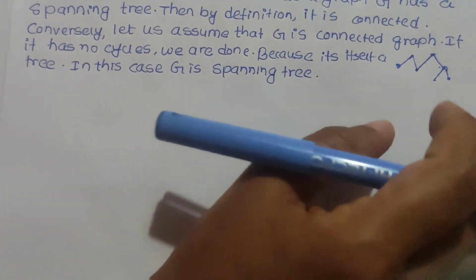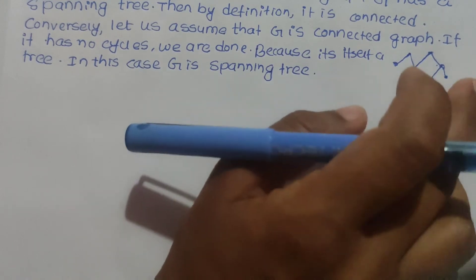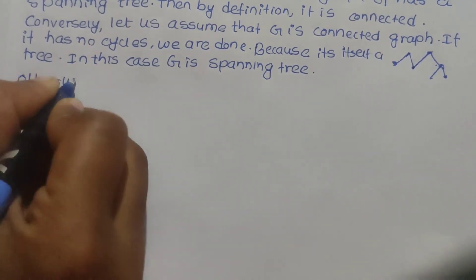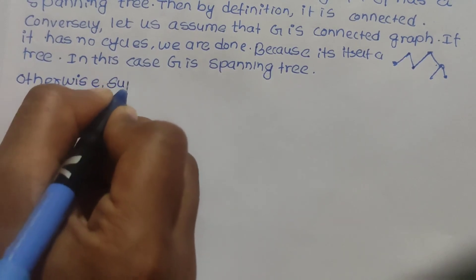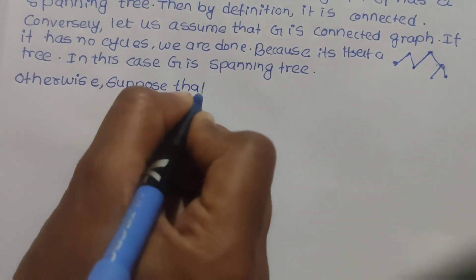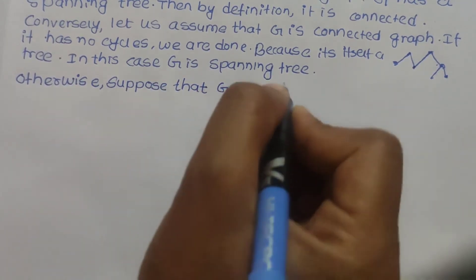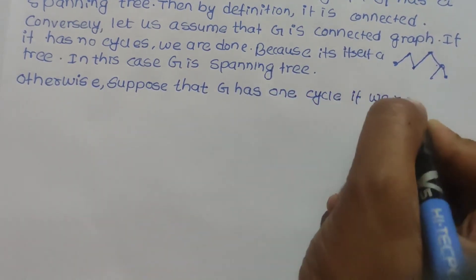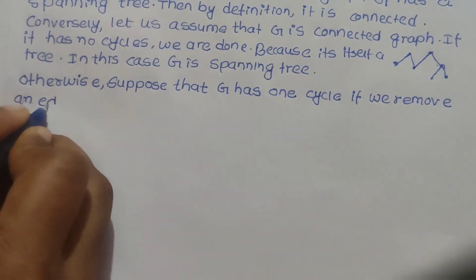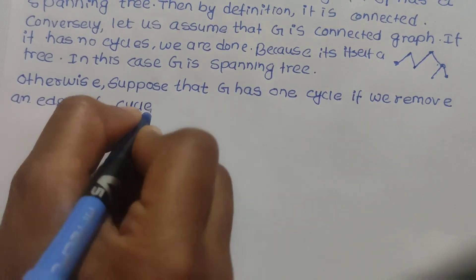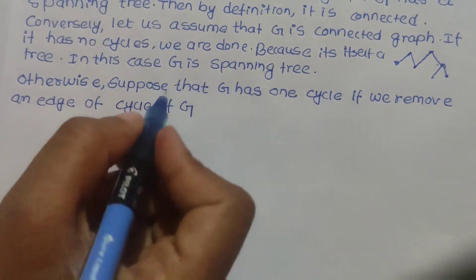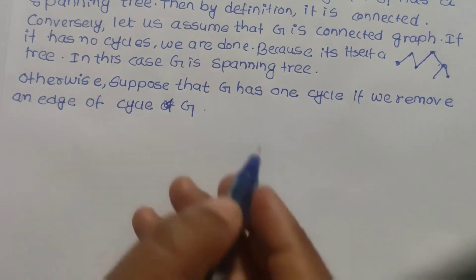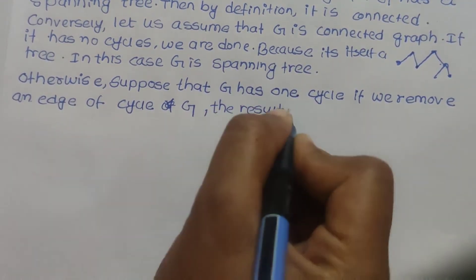Now if we have a connected graph with cycles, we remove one edge from a cycle. The resulting graph is still a spanning tree candidate and is still connected, as it has the same number of vertices.